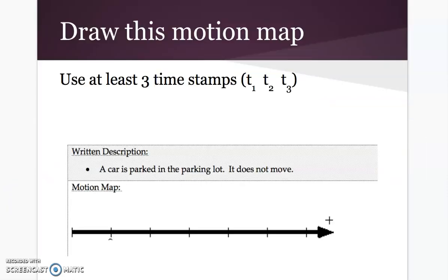Let's try drawing one. So this is actually number one on your homework. I'll do it with you. So take a moment and think about how you would draw a car that is parked in the parking lot that does not move. Maybe try this. This again is on the paper in your binder called Motion Maps. Okay, so I'll try this now that you've tried it.